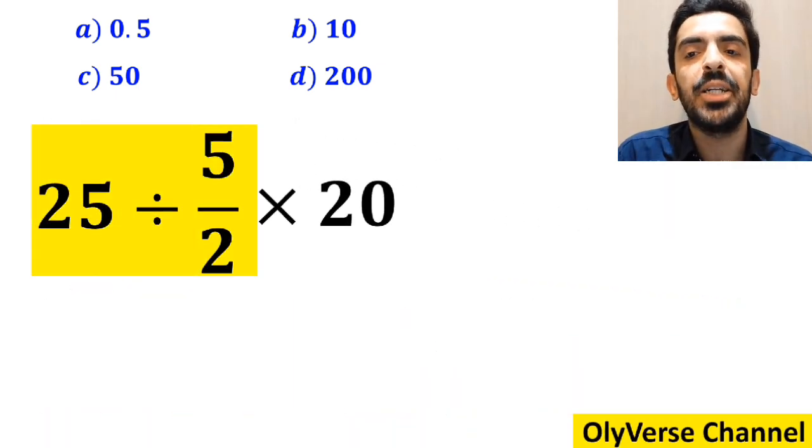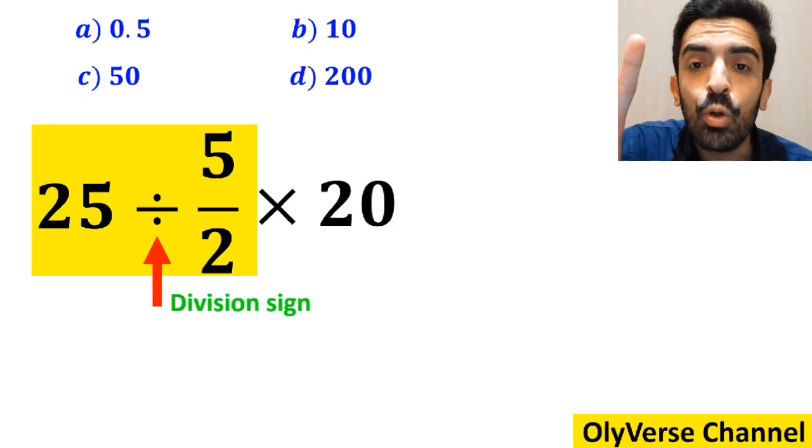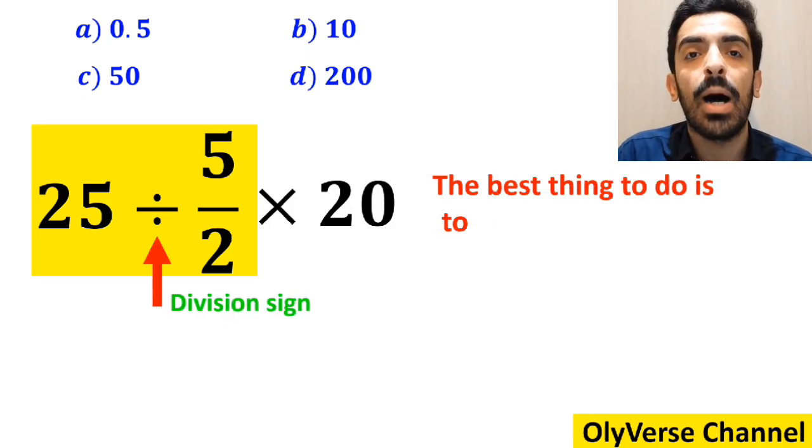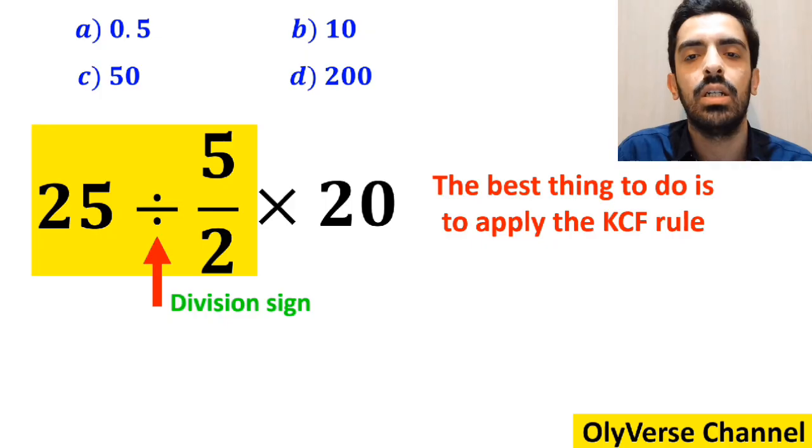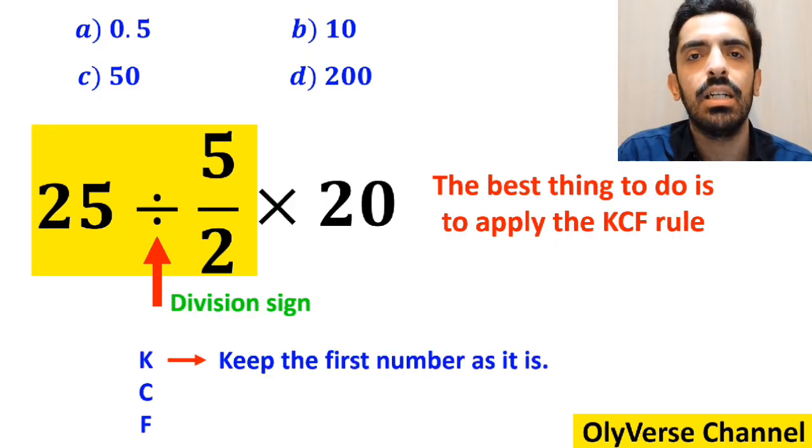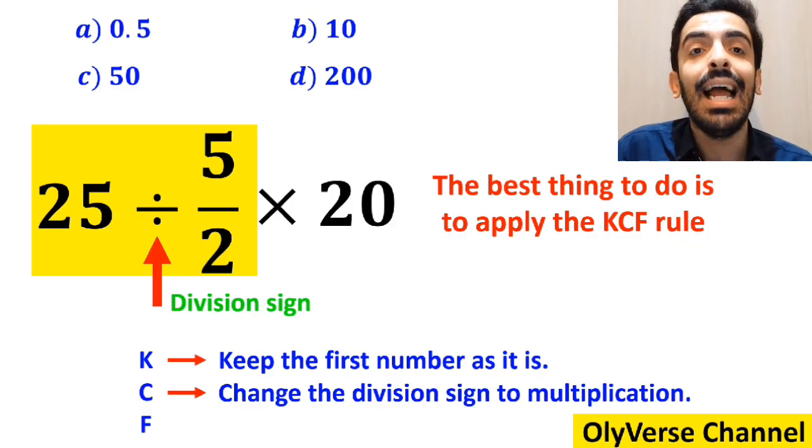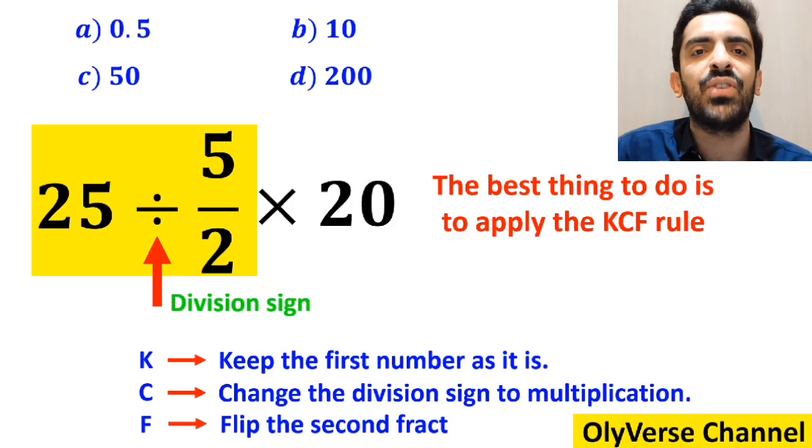So first we start with the expression 25 divided by 5 over 2. Whenever we come across a division sign between two terms, the best thing to do is to apply the KCF rule. In this rule, K stands for keep the first number as it is, C stands for change the division sign to multiplication, and F stands for flip the second fraction.